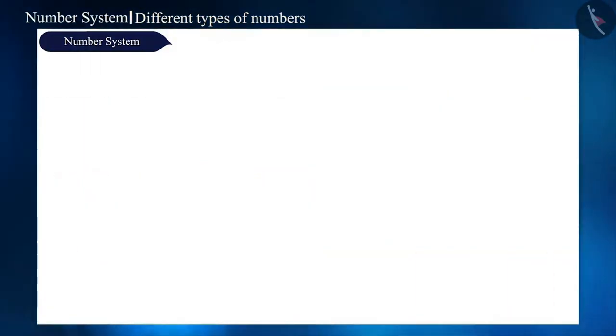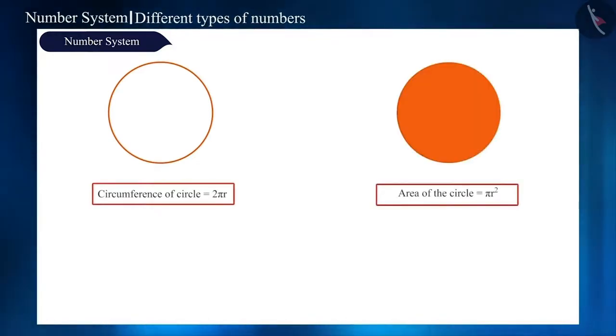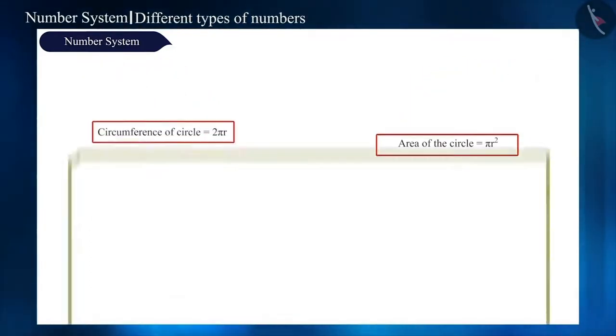Let us see the next fact. In our previous classes, we have solved many questions related to the circumference or area of the circle. The formula for circumference and area of a circle is 2 pi r and pi r square respectively.